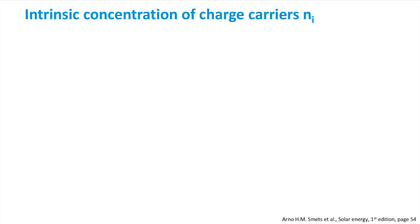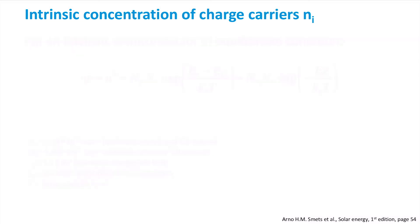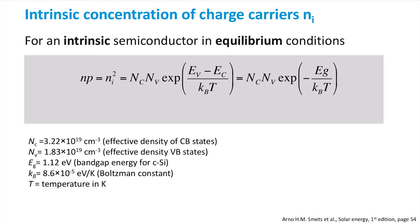Now we get to an important property of semiconductors, the intrinsic carrier concentration or Ni. Ni squared is equal to the product of N, the concentration of electrons occupying states in the conduction band, and P, the concentration of holes occupying states in the valence band. This product can be calculated as follows. In the simplified expression, we can see that Ni is just dependent on the band gap, temperature, and effective densities of states.